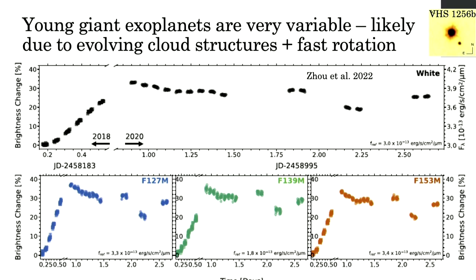Another interesting empirical observation is that young planets appear to be highly variable. We haven't actually measured this for a high-contrast companion yet — they're just hard to detect. But here's an example of a very wide companion, VHS 1256b, 8 arc seconds away from its M-star binary primary. It is the most variable brown dwarf or exoplanet known to date. This is an HST light curve: in 2018, over eight hours, it changed by over 20%, and comparing the 2018 minimum with the 2020 maximum, it varied by 38%. We expect closer-in companions to be equally variable.